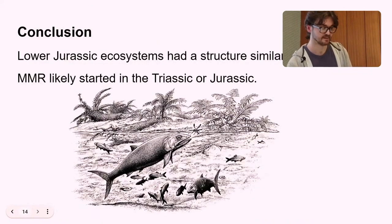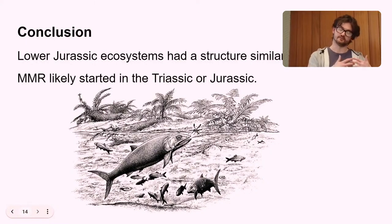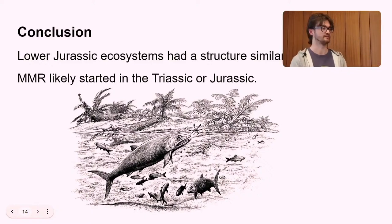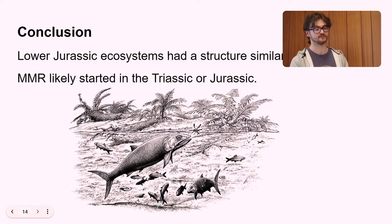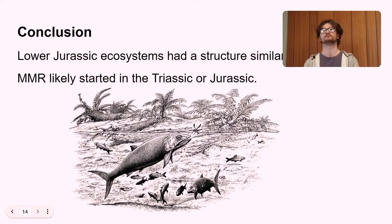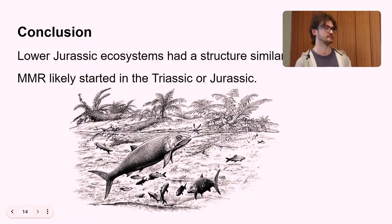So in conclusion to that, I believe that the lower Jurassic ecosystems had a similar structure to the modern, based on when you had very restrictive size rules. And therefore, the MMR was likely to have started in the Triassic or Jurassic. Obviously, there were a lot of caveats with this. The Toarcian oceanic anoxic event actually reduced the amount of low-trophic organisms in strawberry bank in the first place. And the trait rules did not probably adequately reflect the real ecosystem structure. But saying all that, I still think that, given those restrictive size rules, strawberry bank produced a somewhat modern ecosystem structure. So yeah, so that's the talk. Has anyone got any questions?